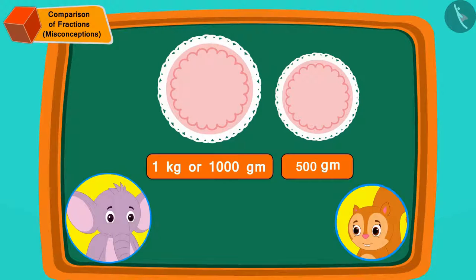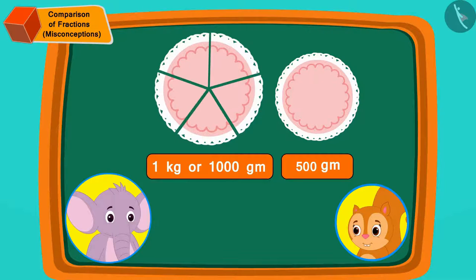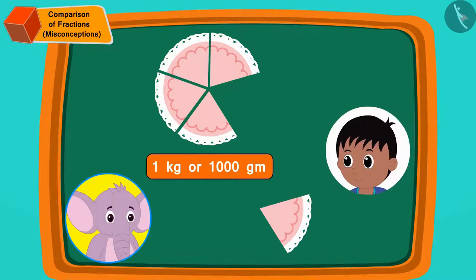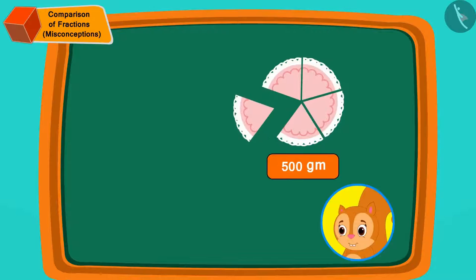Both cut their respective cakes into 5 equal pieces. Appu gave one piece of his cake to Raju and Chanda gave one piece of her cake to Bablu.